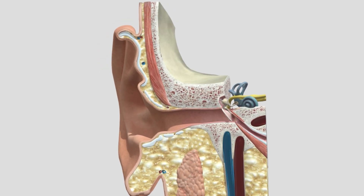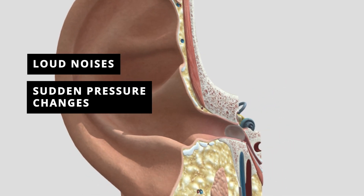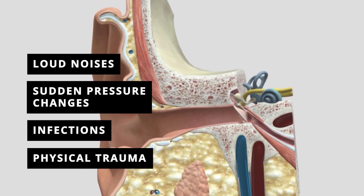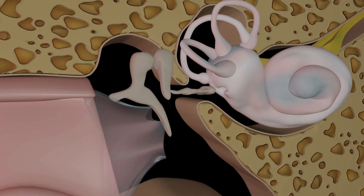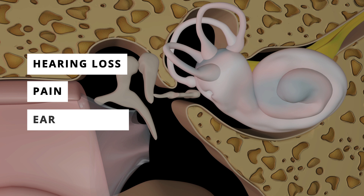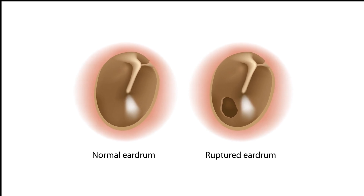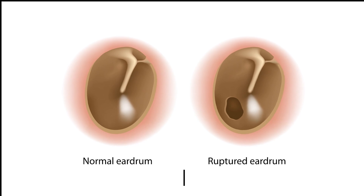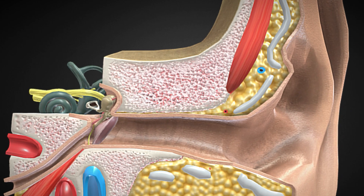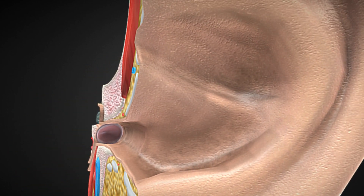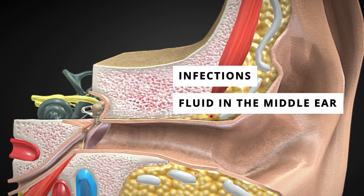The eardrum is sensitive and can be damaged by various factors, such as loud noises, sudden pressure changes, infections, or physical trauma like poking it with a cotton swab. A perforated eardrum — a tear or hole — can lead to hearing loss, pain, and increased susceptibility to ear infections. In many cases a damaged eardrum can heal on its own, but severe tears may require medical intervention such as surgery. Examination of the eardrum can also provide valuable diagnostic information about conditions such as infections, fluid in the middle ear, or eardrum perforation.